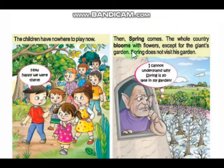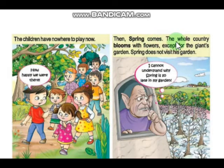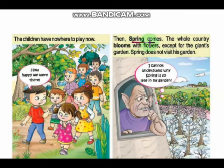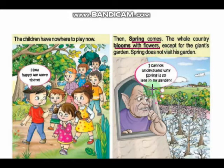The children now have nowhere to play. Then spring comes and the whole country blooms with flowers, except for the giant's garden. Spring does not visit this garden. The giant wonders, 'I cannot understand why spring is so late in my garden.' The children are very sad and they left the place.